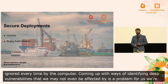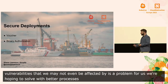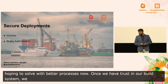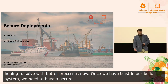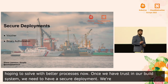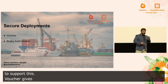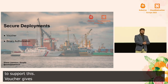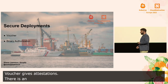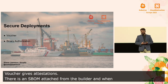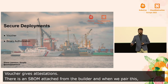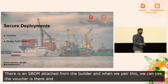Once we have trust in our build system, we need to have a secure deployment. We're using our cloud provider's binary authorization to enforce this, but we also have an open source project called Voucher. It already gives attestations for build provenance and CI checks. What we're adding now is an extension of this to attest that there is an SBOM attached from the builder. When we pair this with binary authorization, we can see that the Voucher attestation is there and refuse to deploy anything into our production environment if it does not have an SBOM.